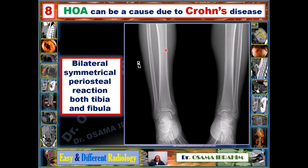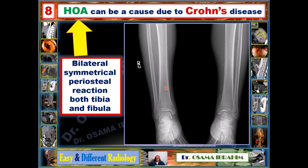If we are presented with a case like this — tibia and fibula showing periosteal reactions in both bones in a symmetrical way — we describe it as a bilateral symmetrical periosteal reaction of both tibia and fibula, and this is the definition of HOA. At that point, we should discriminate whether it is primary or secondary, because secondary HOA has many systemic pathologies to rule out.